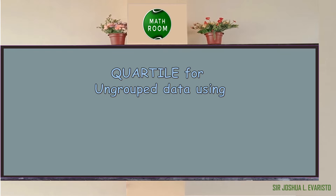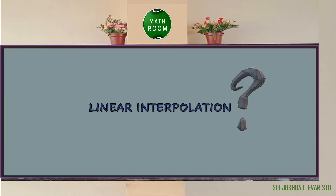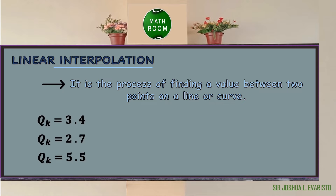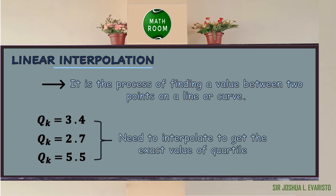After the Mendenhall and Sinsic method, let us discuss how to solve quartiles for ungrouped data using linear interpolation. Interpolation is the process of finding the value between two points on a line or curve. In statistics, sometimes the quartile point will be between two numbers, such as 3.4, 2.7, or 5.5. To get the exact value of the quartile, we need to interpolate the data.